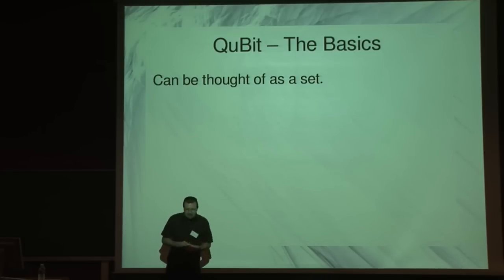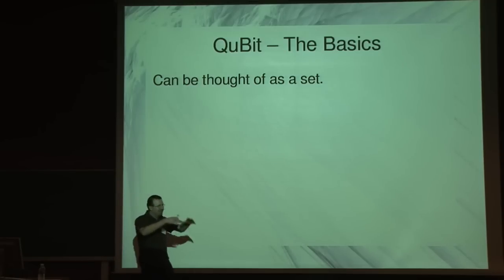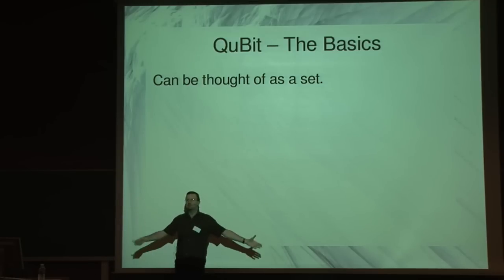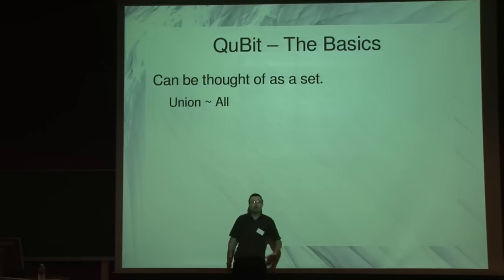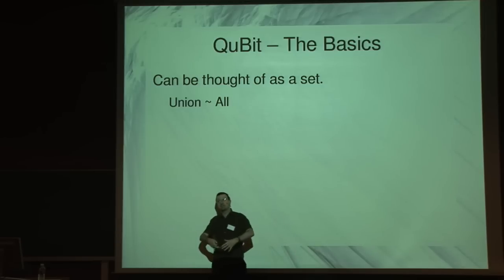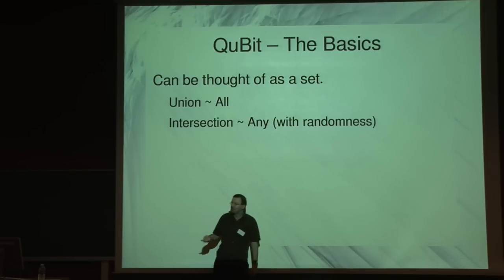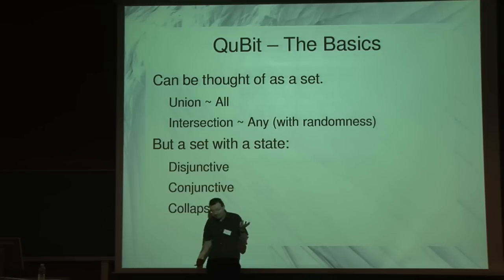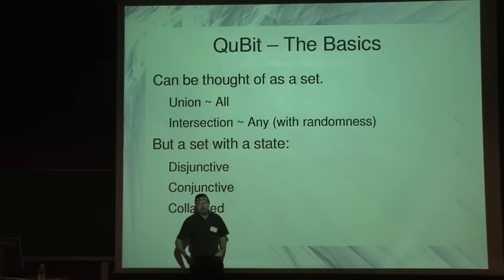So, is there an easy way of doing all this interesting, clever stuff? Yes — it's just a set, really. If you want to break it down, you've got a set of numbers, and if you perform an operation on a set, you perform it on the whole set. The 'all' operation — if all of the numbers are less than 20 — that's the union. If it's 'any', then that's an intersection. We have a state, however — that's what differentiates sets from quantum superposition states.